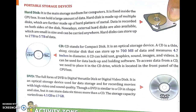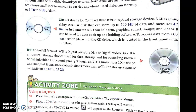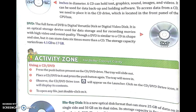DVD — the full form is Digital Versatile Disk or Digital Video Disk. It is an optical storage device used for data storage and for recording movies with high video and sound quality. Though a DVD is similar to a CD in shape and size, it can store data 6 times more than a CD. Its storage capacity ranges from 4.1 GB to 17 GB.